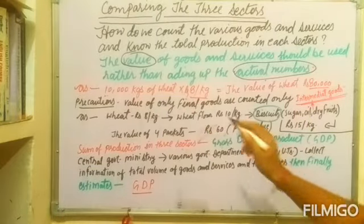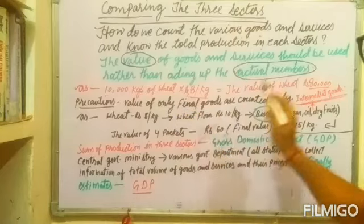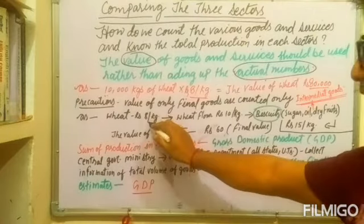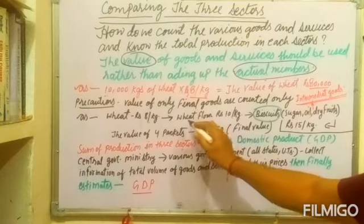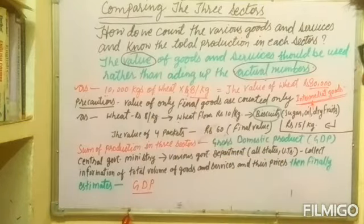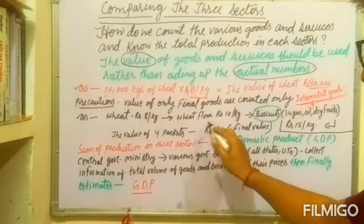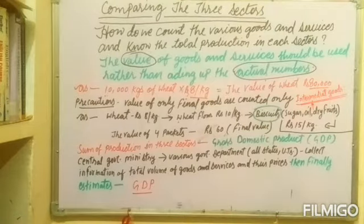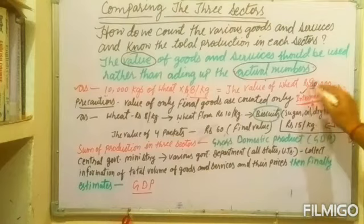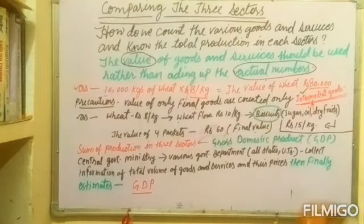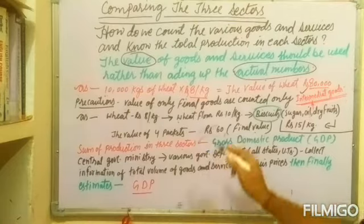We take only the final value of goods. The final value is 80,000 rupees, but the right process of counting works like this: 8 kg of wheat is sent from the farmer to a grinding machine, where it is turned into wheat flour. The factory then adds flour, sugar, oil, and dry fruits — these are all known as intermediate goods — which are used to produce biscuits.